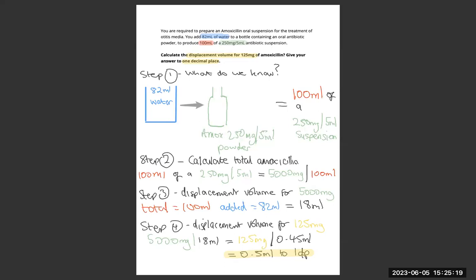We know that 100 mils contains 5000 milligrams. Now we know that 5000 milligrams are inside 100 mils. We know that we have a total volume of 100 mils and we had to add in 82. So therefore our displacement volume for that 5000 milligrams is 18 mils.